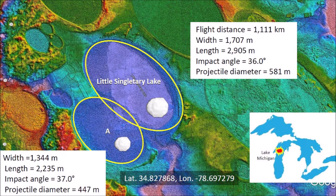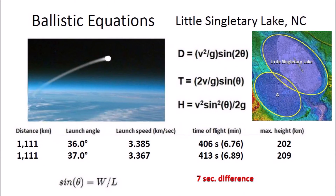Little Singletary Lake is located 1,111 kilometers from Lake Michigan, assumed to be the launch point of the ice boulder that made the basin. The basin has a width of 1,707 meters and a length of 2,905 meters — with a length of almost 3 kilometers, it is not so little. The width-to-length ratio corresponds to an impact angle of 36.0 degrees. The diameter of the glacier ice projectile is estimated to be 581 meters, one-fifth of the basin length. The ballistic equations indicate the boulder was launched at 3.385 kilometers per second, had a flight time of 406 seconds, and reached a height of 202 kilometers — a suborbital spaceflight in the vacuum of space.